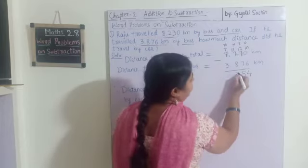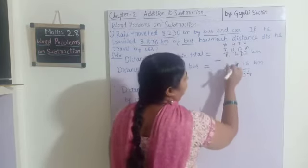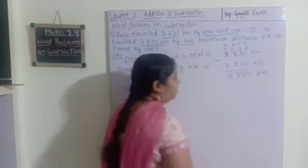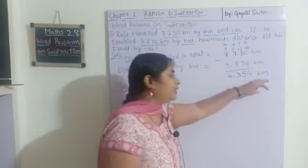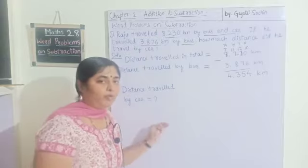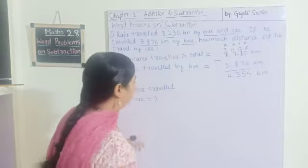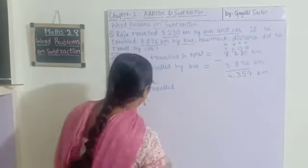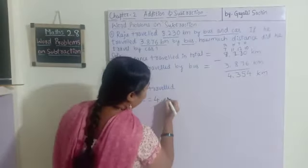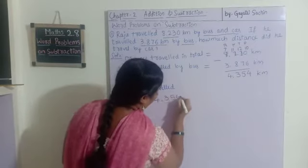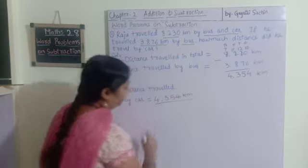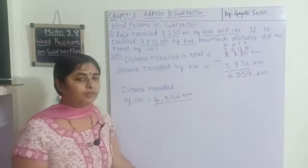And seven minus three is four. This is kilometers — we have to write the measuring units properly: centimeter, kilometer, kg, gram — we must write them. So the answer: distance traveled by car is equal to four thousand three hundred and fifty-four kilometers. Like this we go on solving word problems.